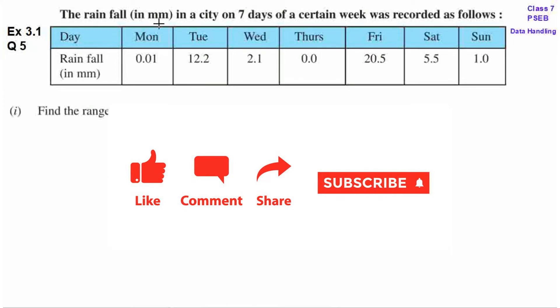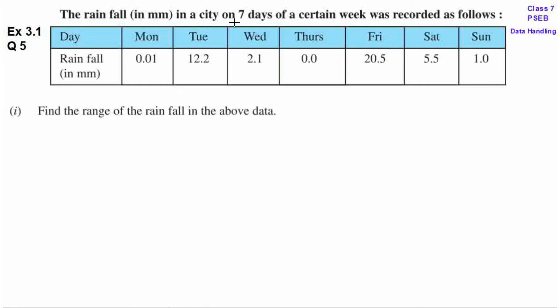The rainfall in millimeters in a city on seven days of a certain week was recorded as follows. So, in a city in seven days, the rainfall record is kept here.